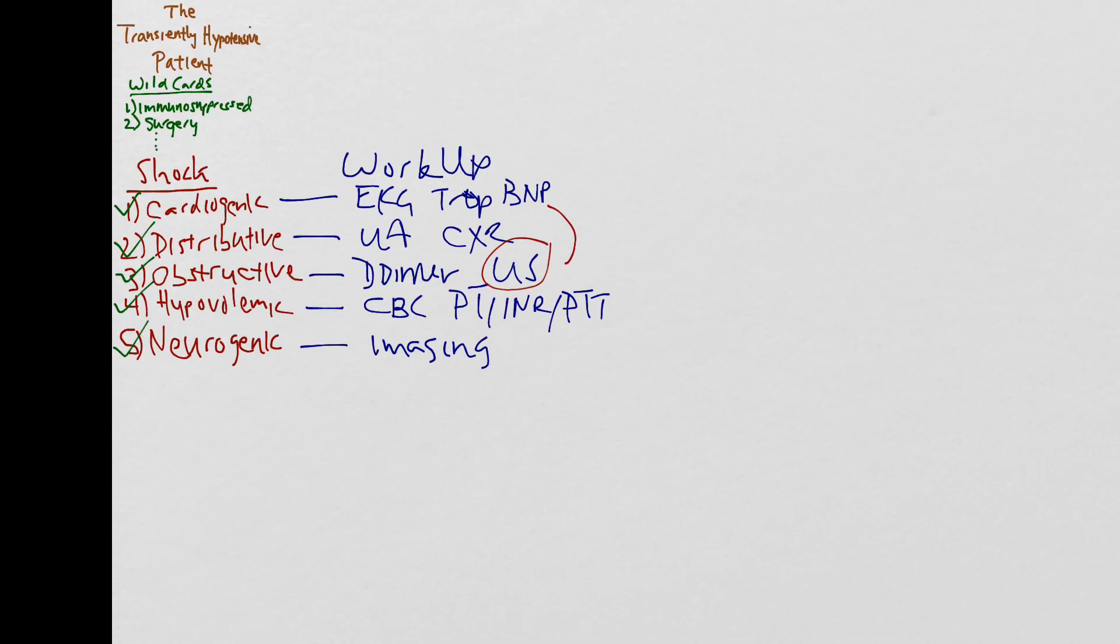The final consideration is whether to admit or DC home. This is always the hardest question to answer, especially in a patient that is now normotensive and had a negative workup. If the patient has any wild cards, you should consider admitting them for observation. These patients have a higher rate of adverse outcomes when discharged home.